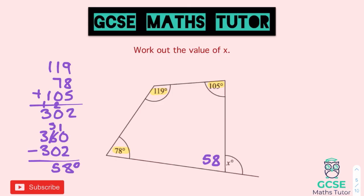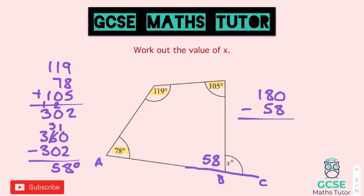On a question like this, I would prefer it if it labelled the points A, B, and C and told us that ABC was a straight line, because most questions would do that. Now we know it's a straight line, we can figure out what makes 58 add up to 180. So we do 180 take away 58. We'll borrow from the 8: 8 from 10 is 2, 5 from 7 is 2, and 0 from 1 leaves 1. So that angle is 122 degrees, and that is the final answer.